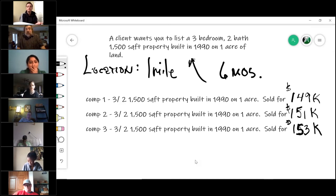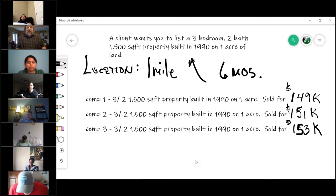So now let's assume we've looked within our mile and our six months and we have found three comps. Notice that these houses are a three-two—that's the slang for three bedroom, two bath. They're three-two, 1500 square foot properties built in 1990 on one acre. One of them sold for $149,000. The second comp you find, exact same property, sold for $151,000. And then a third comp that sold for $153,000.